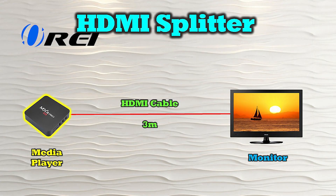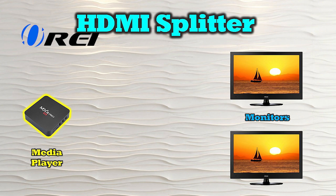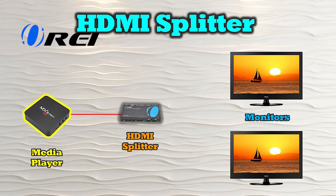An HDMI splitter is a device that allows you to connect multiple display devices to the same media source. A typical setup would include a media device like a game console or a computer and two monitors. The key thing to keep in mind is that this is a local connection, limited to standard HDMI distances — typically less than 10 meters. You would disconnect your media device from your monitor and connect it to the HDMI input port of the splitter, then use two additional HDMI cables to connect each monitor to the output ports. Some sophisticated models, like the O-Ray UHDS-102A, can accommodate monitors with different display resolutions and will automatically scale the media to accommodate each connected monitor.